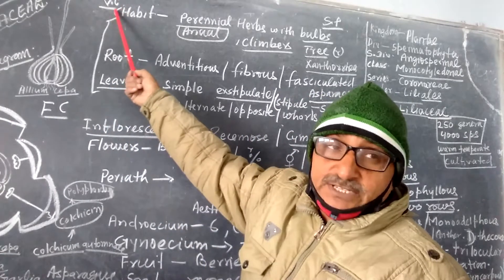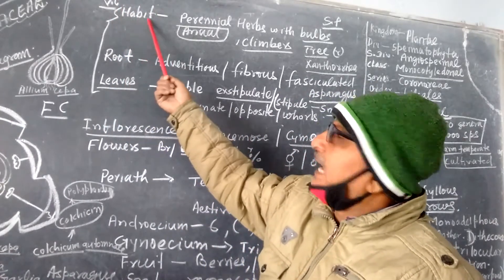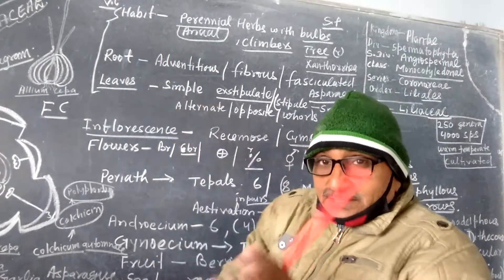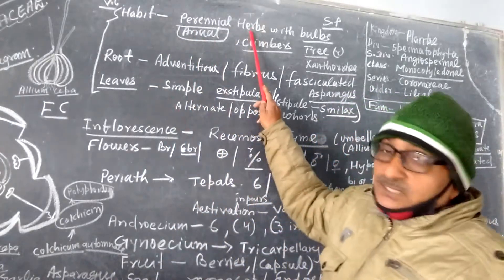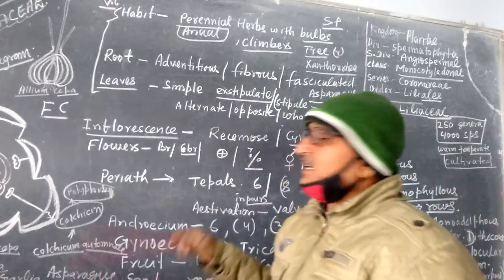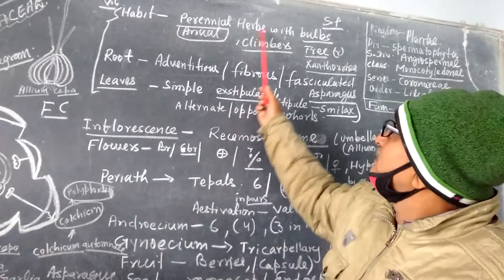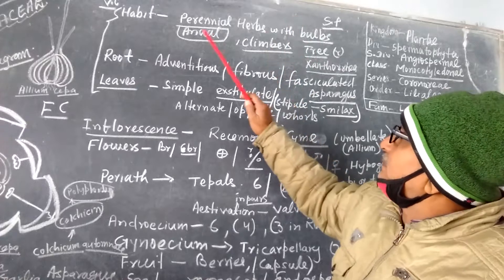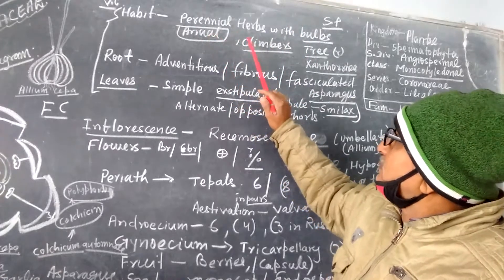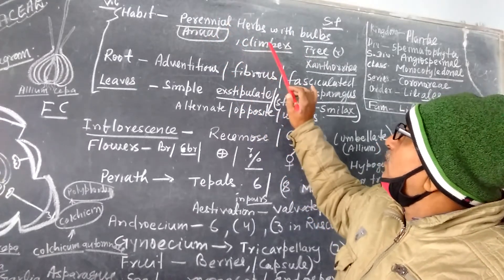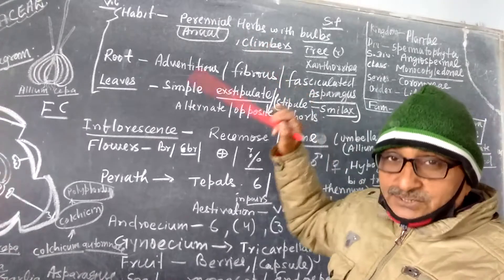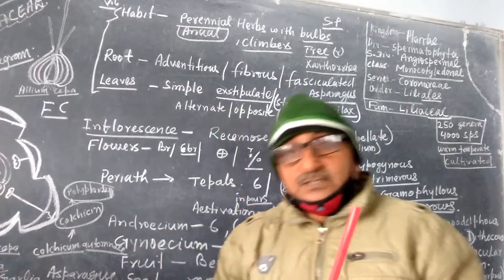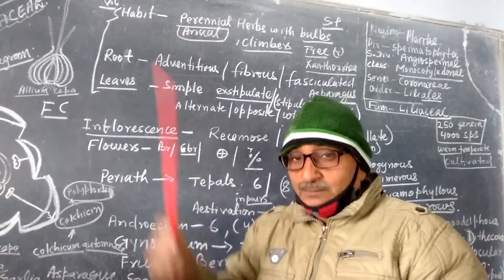First of all, see the vegetative characters. It has a habit. The plants appear like perennial herbs, weak stem plants generally, Allium you are familiar with, and bulbs. The stem has bulbs like annual or sometimes perennial or climbing bulbs, so they may require support to climb up.